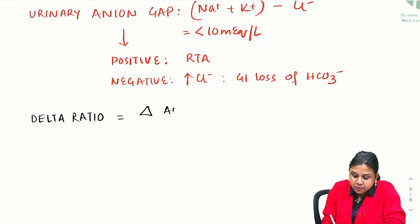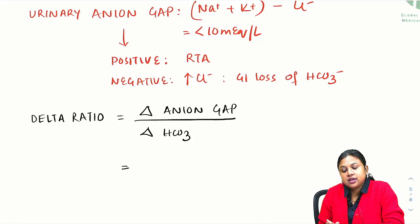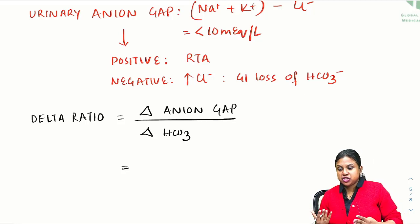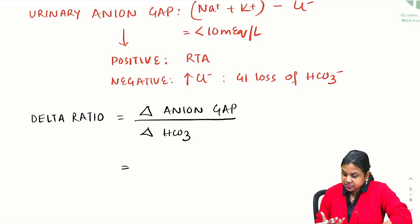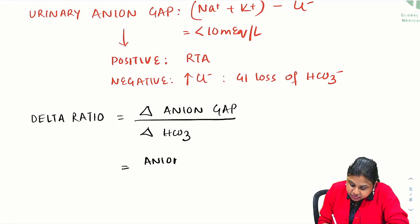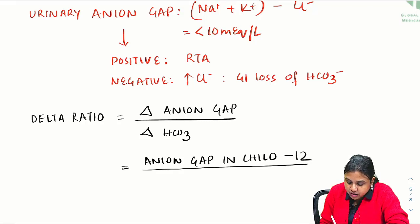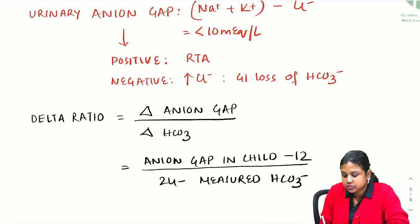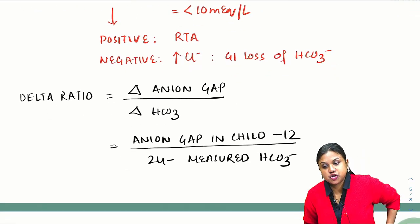Delta ratio is delta anion gap by delta bicarbonate. In other words, it is anion gap in the patient minus 12 divided by 24 minus measured bicarbonate. This is the formula of delta ratio.